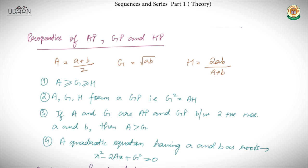We also say that if A is the arithmetic mean, G the geometric mean, and H the harmonic mean, then A, G, H always form a geometric progression, i.e., G² = A·H. This is easily verified: the product A·H = [(a+b)/2]·[2ab/(a+b)] = ab = G². So G² = A·H, confirming A, G, H always form a GP. Furthermore, if A is the arithmetic mean and G the geometric mean between two positive numbers a and b, then A ≥ G — equality holds when a = b.